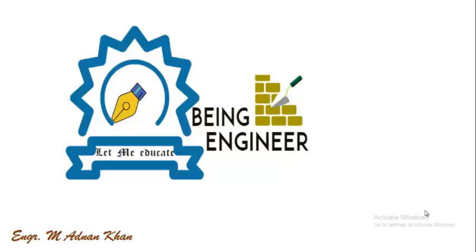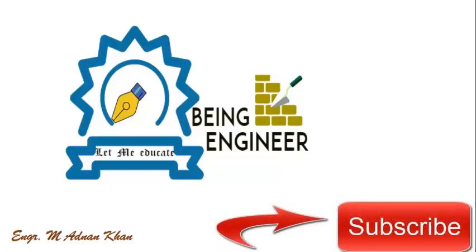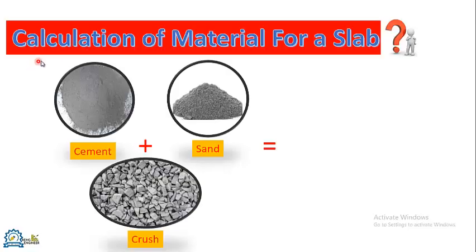Hello guys, I am engineer Muhammad Adnan Khan and you are watching YouTube channel Being Engineer. Please subscribe to get new uploads. Today we'll learn about the calculation of material required for a slab. Concrete is a mixture of three ingredients: cement, sand, and crush. When these materials are mixed in a fixed proportion, they form concrete.